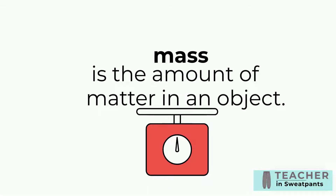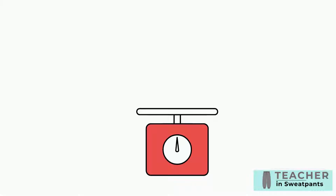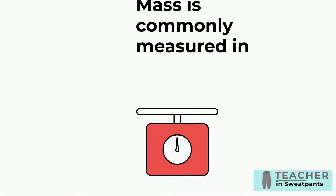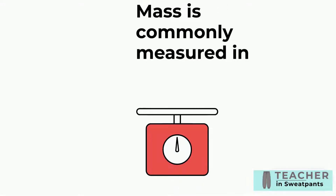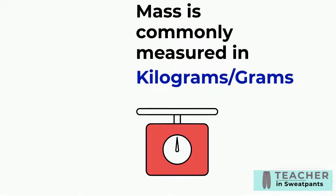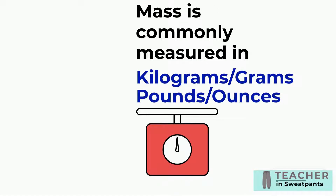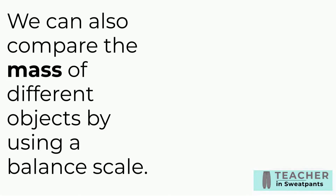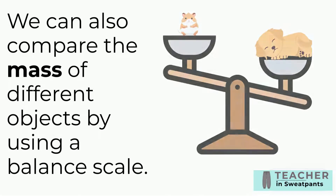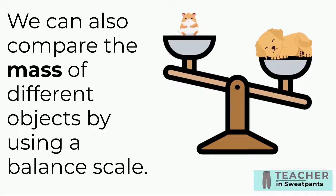Mass is the amount of matter in an object. Mass is commonly measured in kilograms and grams, pounds, or ounces. We can also compare the mass of different objects by using a balance scale.